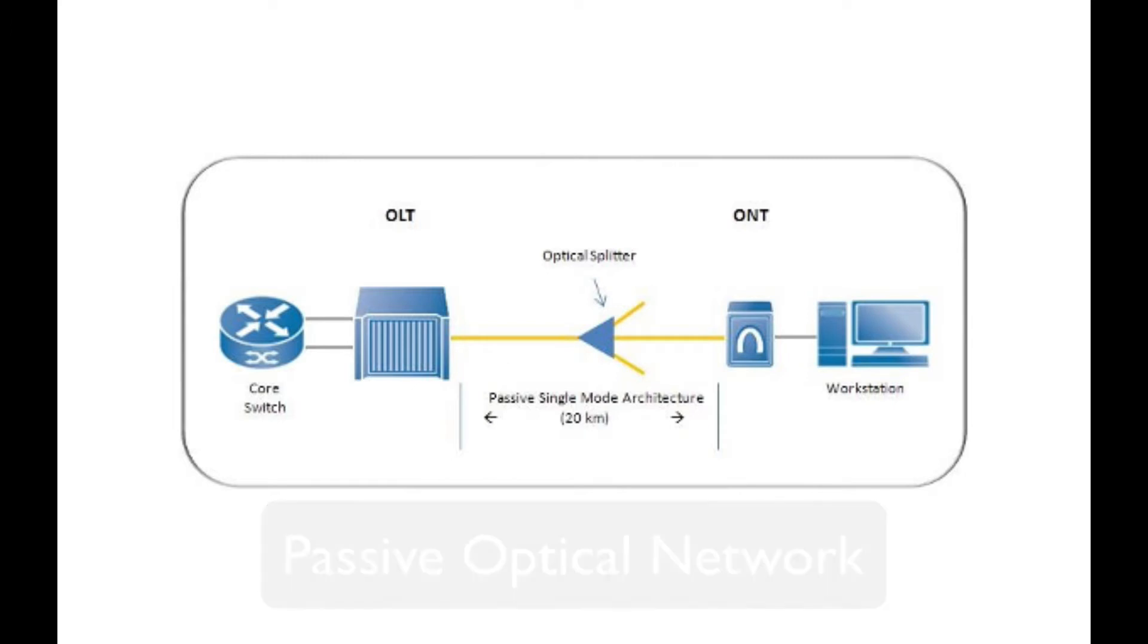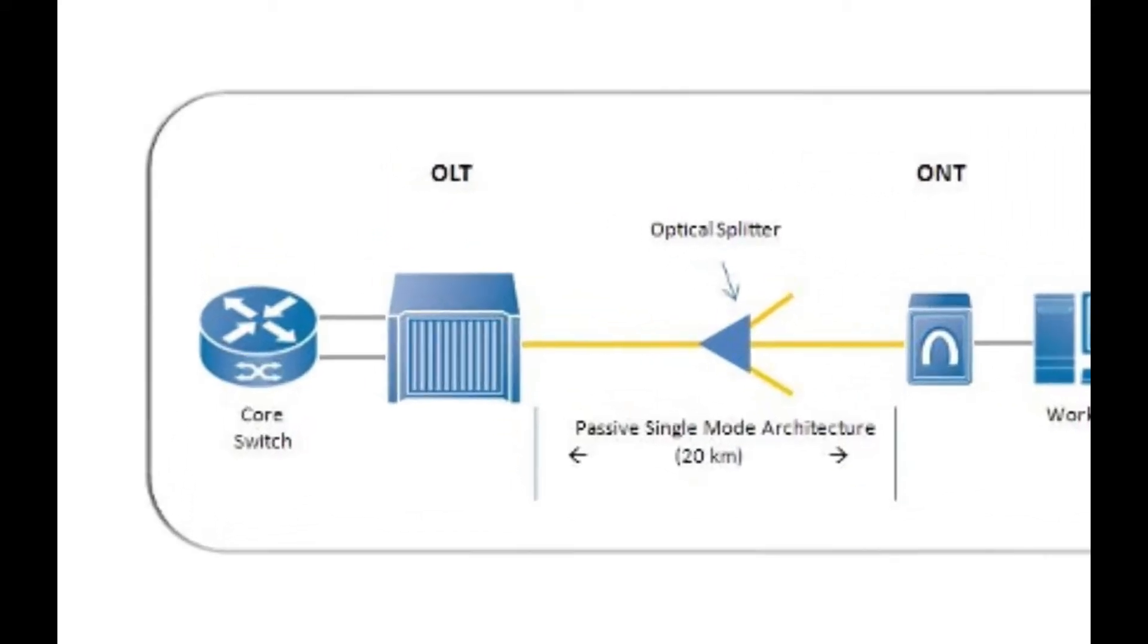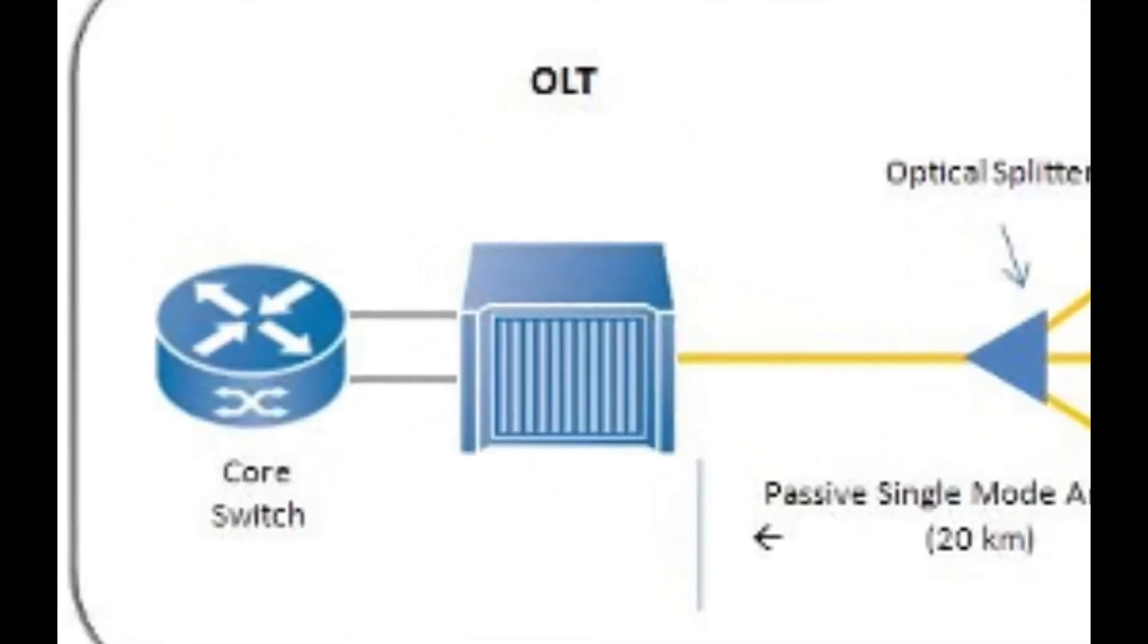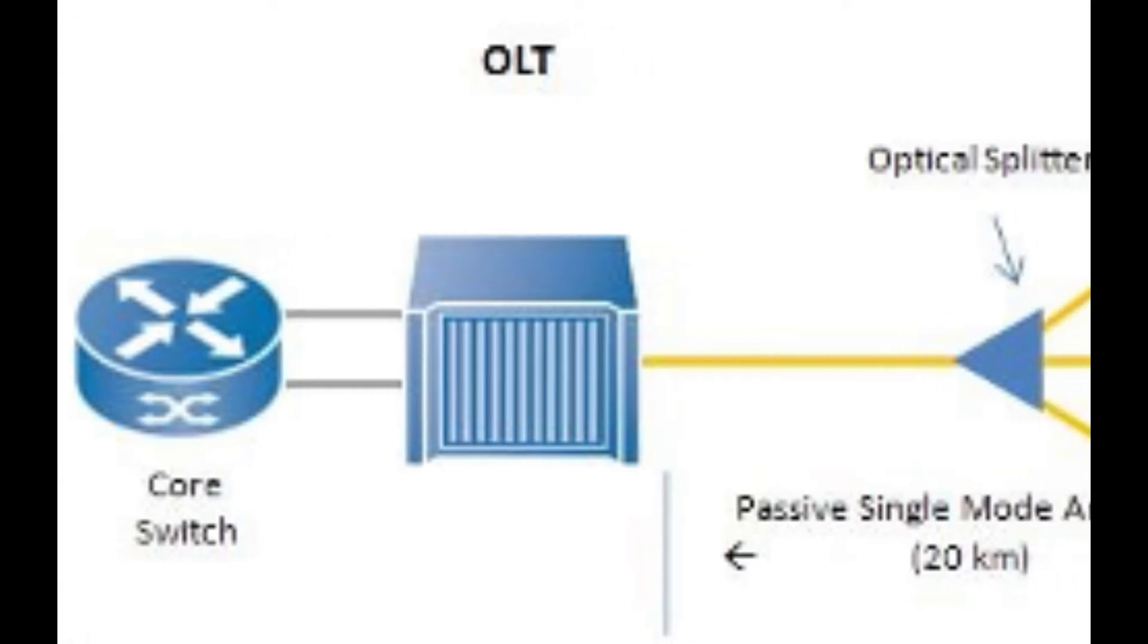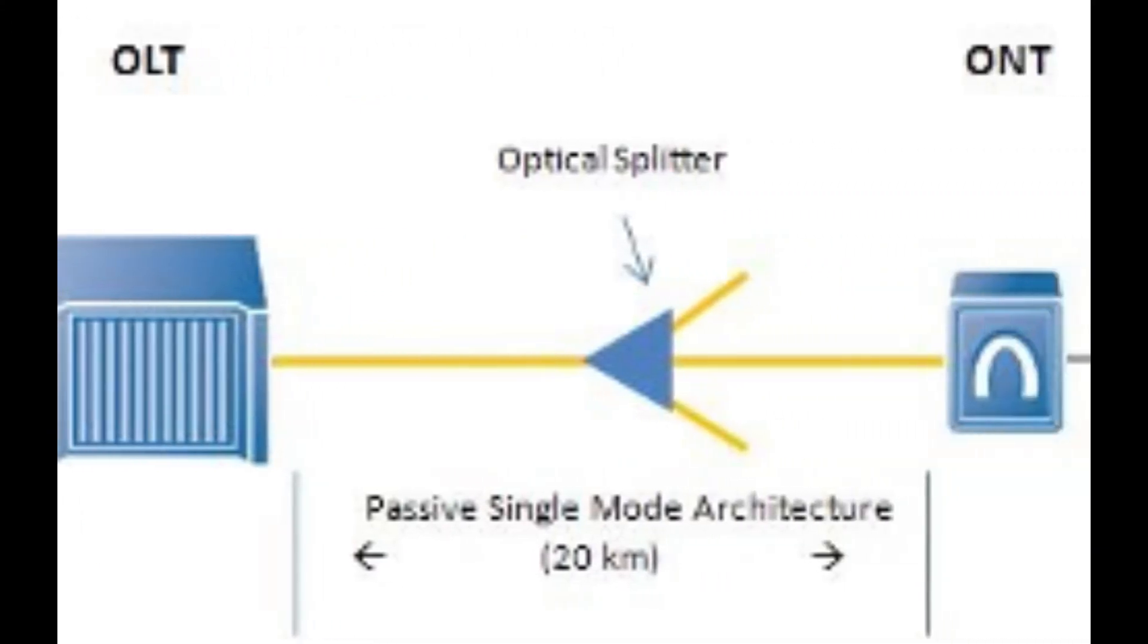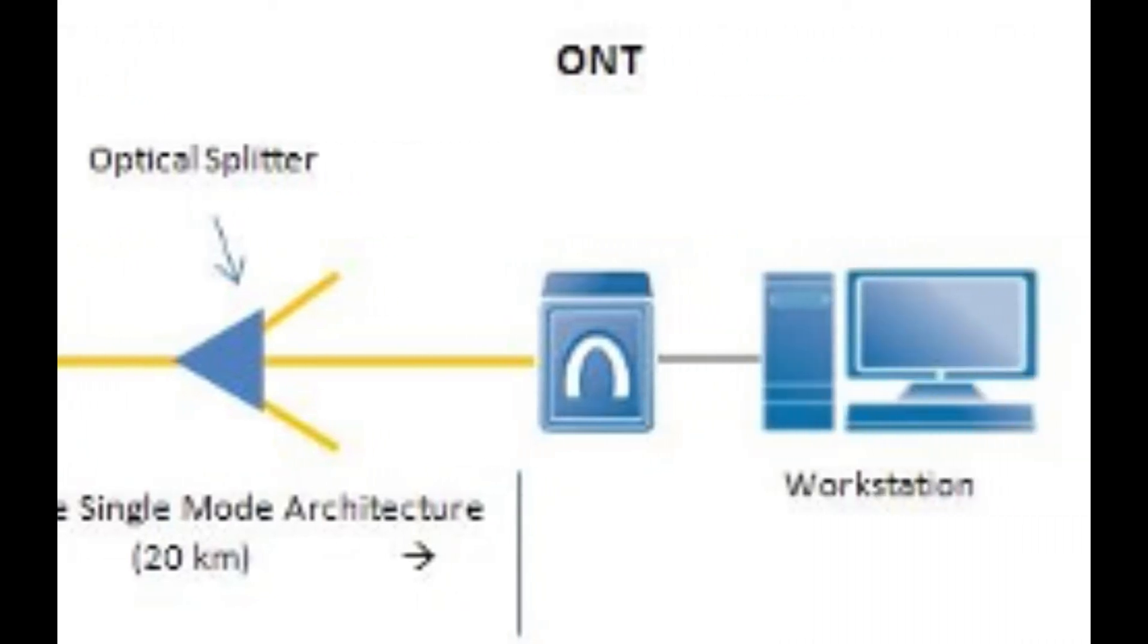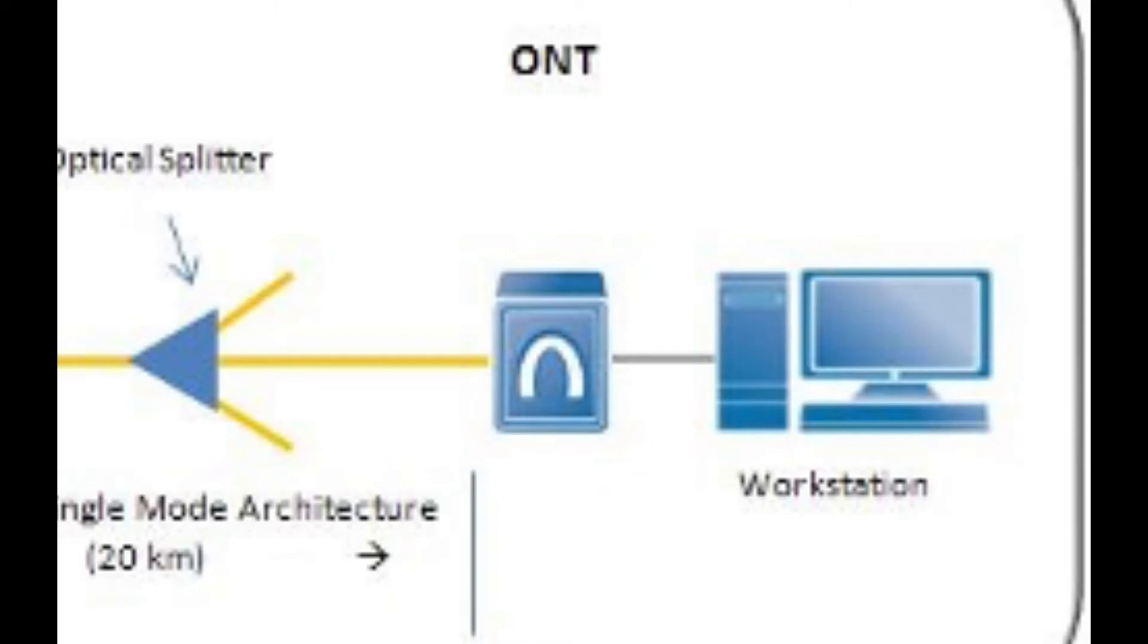A passive optical network consists of three main sections: an optical line terminal or OLT at the head end of the network, an optical splitter to distribute the bandwidth to each endpoint, and a number of endpoints commonly called either optical network units or optical network terminals.